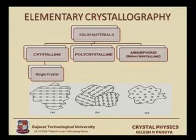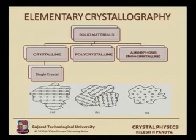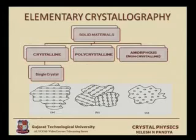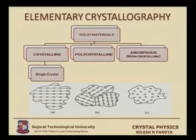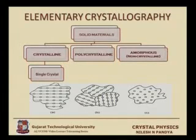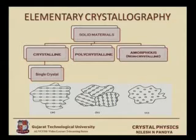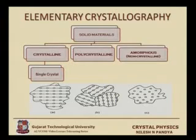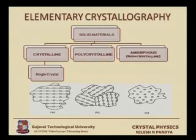Let us go deeper into crystallography. Solid materials can be divided into crystalline material, polycrystalline material, and amorphous. As you can see in figure A, crystalline materials have a very perfect atomic arrangement — in this two-dimensional view, in the X and Y directions, atoms or lattice points are formed in a very systematic, beautiful manner. Crystalline materials can be further classified into single crystalline and polycrystalline. Single crystalline means throughout the crystal the periodicity is maintained, while for polycrystalline we will discuss the meaning a little later.